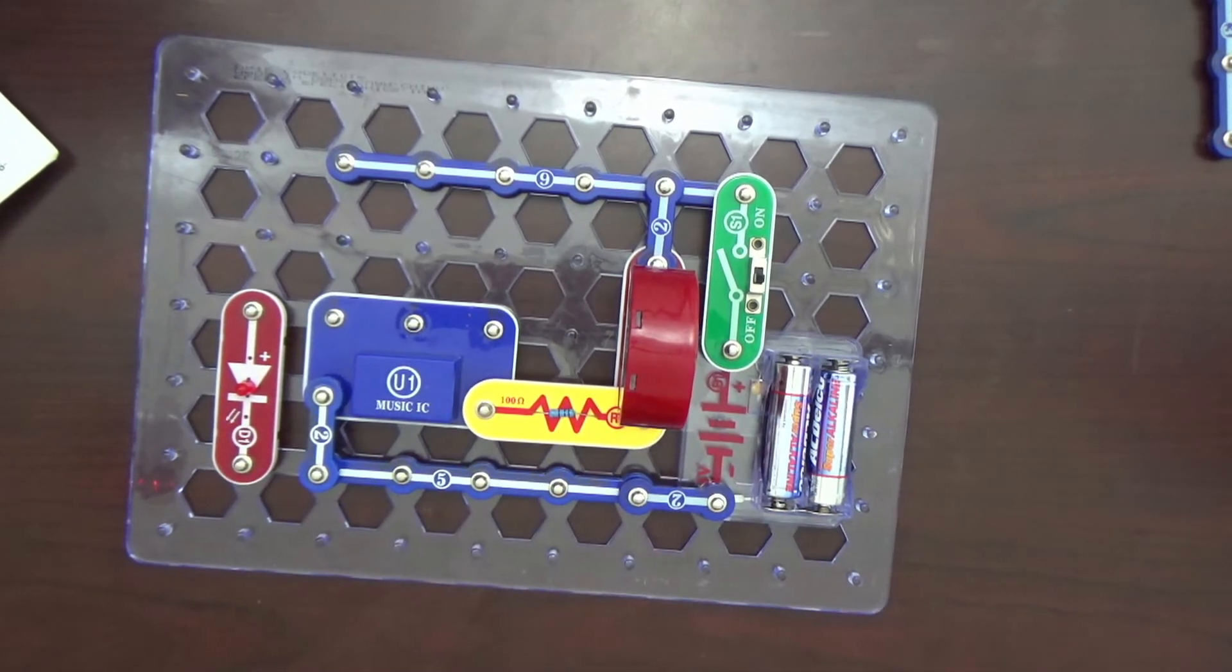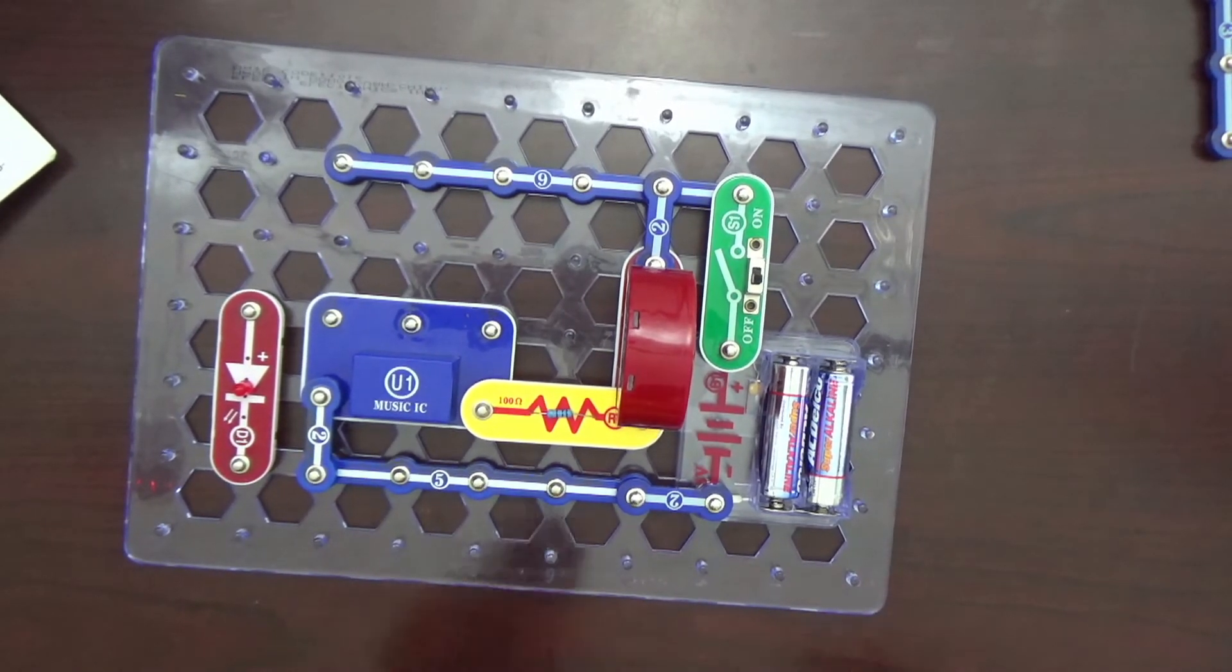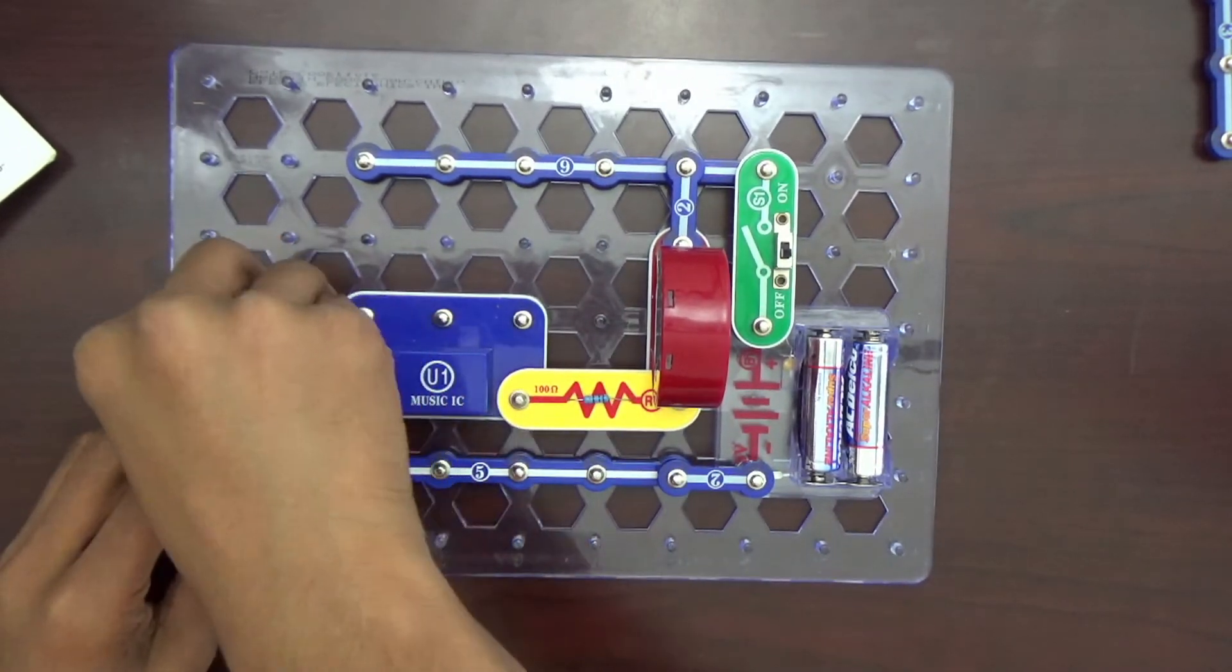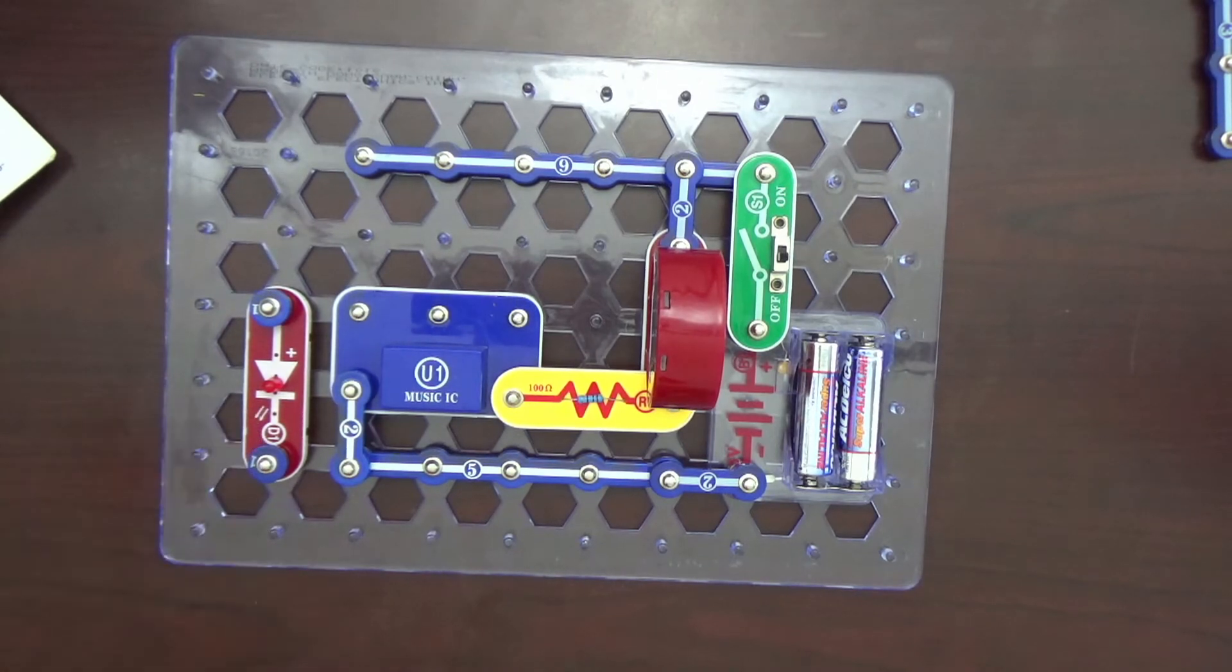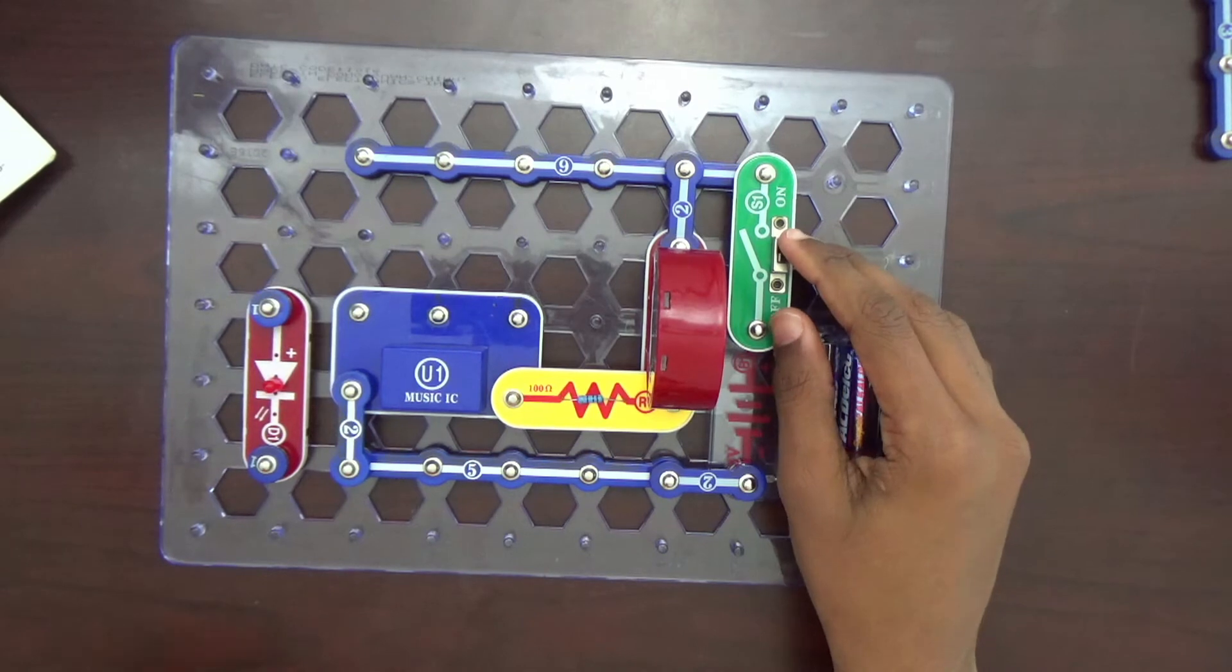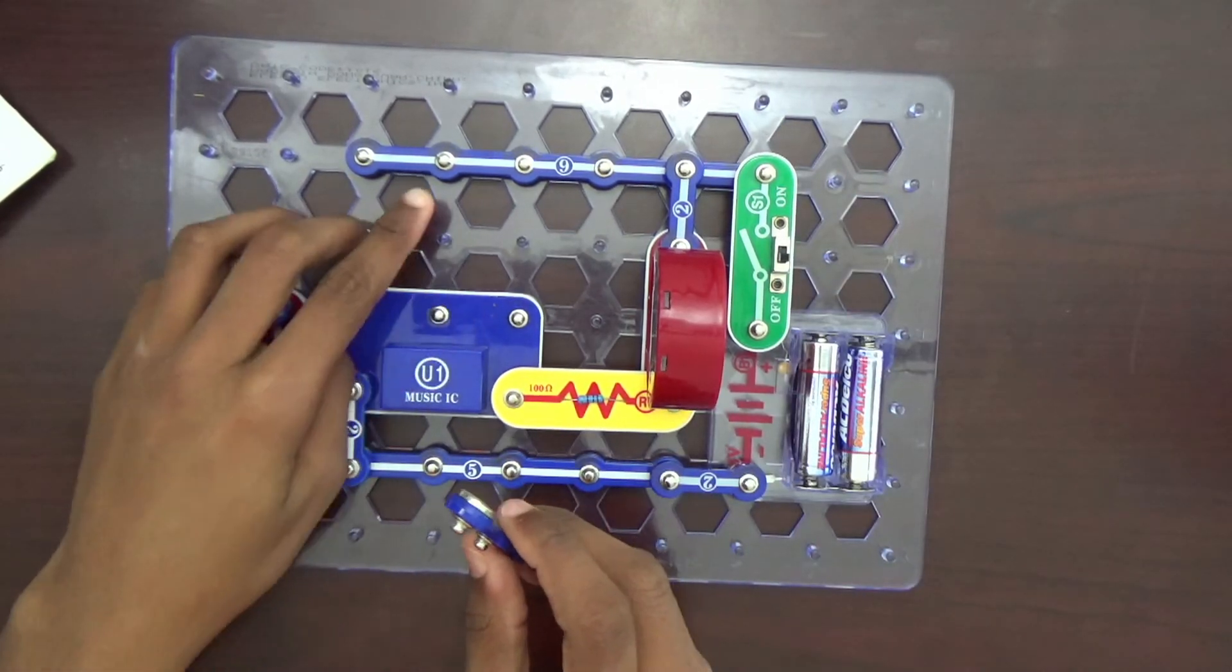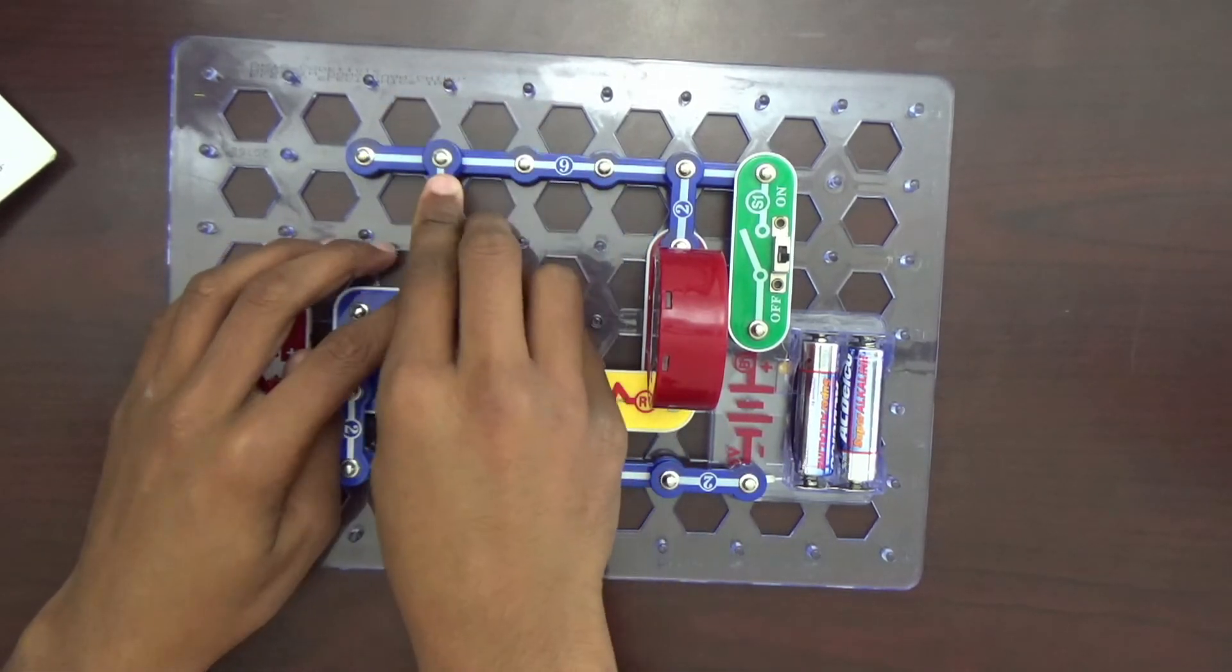We also need two 1 snaps. So, here are our two 1 snaps. And we want to put them on the LED. Like that. And then we want to connect the 3 snap wire we have from the 6 snap to the middle pin.